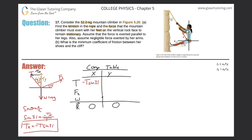For the y component of T, I use cosine because the angle is relative to the y axis — it flips from the usual convention. So T sub Y equals T cosine of 31. Now for F sub L, I'll break it into its x and y components. I'll call the x component F sub L in the x direction and the y component F sub L in the y direction. The x component uses cosine since this angle is adjacent to that side: F sub L cosine of 15.